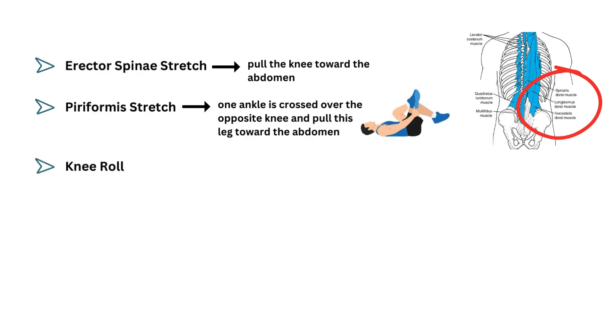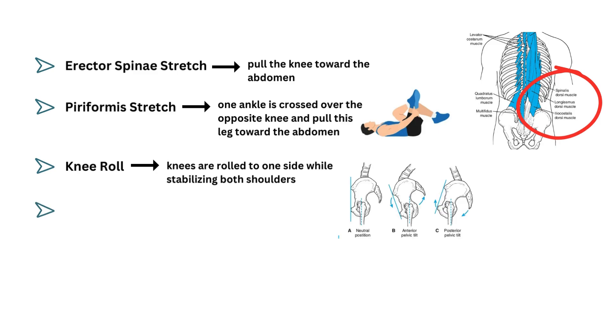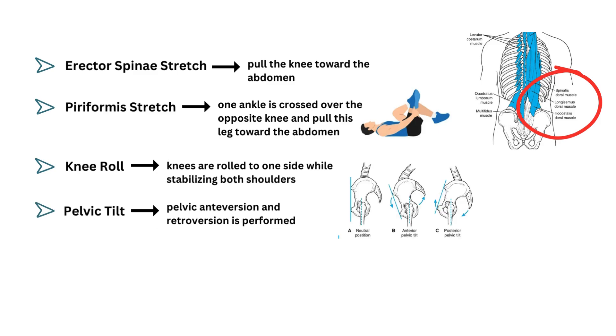Knee Roll — the knees are rolled to one side while stabilizing both shoulders. Pelvic Tilt — in which pelvic anteversion and retroversion is performed.